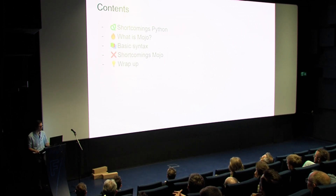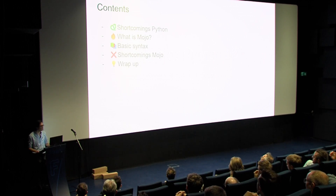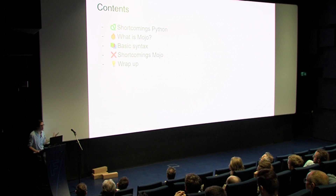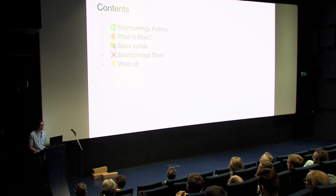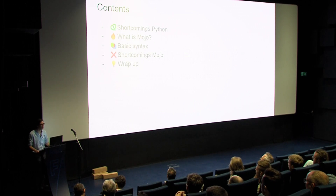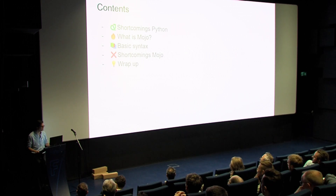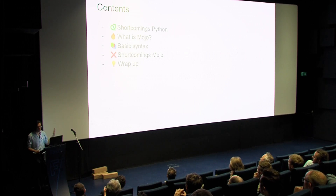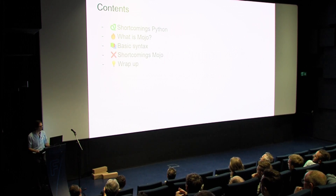This is the outline of my talk. I'll first discuss some of the shortcomings of Python, and then Mojo aims to fix these problems, so I'll also highlight the essentials of Mojo. I think it's also fun to have a look at design choices, so we'll go through a few new additions to the Python language. It's quite new, so there are still some shortcomings, and I'll highlight some of the problems for Mojo in its current form, and then we'll have some time for questions.